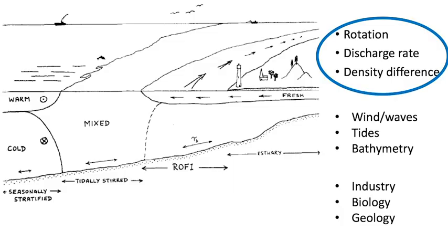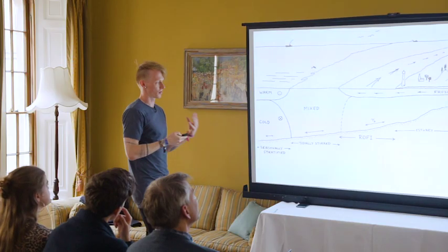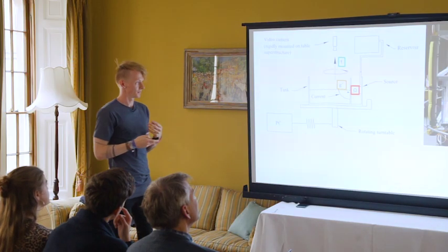The way we did it was to focus on three parameters: rotation rate f, discharge rate Q — the flux of water leaving — and the density difference G', representing how salty versus how fresh your river water and ocean water are.